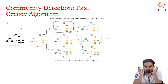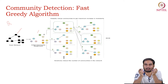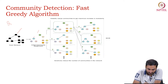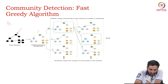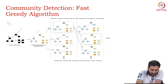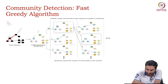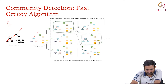We then start clubbing nodes into groups. We decide when to club and when not to club based on the modularity formula. We start from node 1 and we know that node 1 is connected to this one, this one, and this one. We start by taking only the nodes without any edges, and then we start from a seed node.